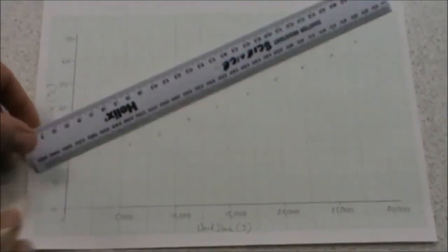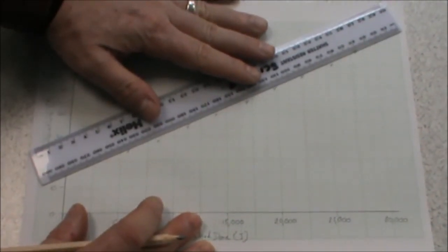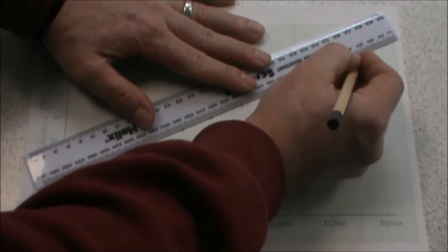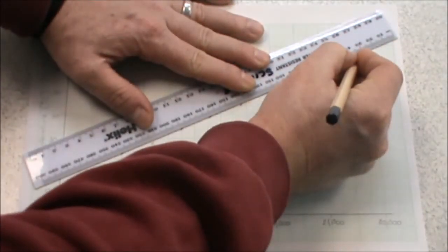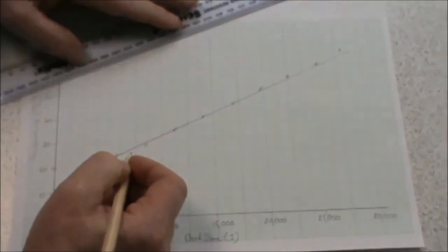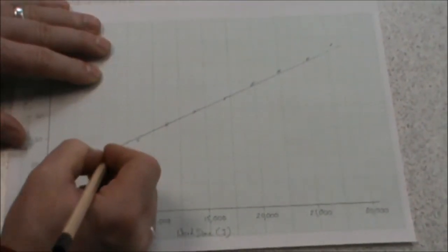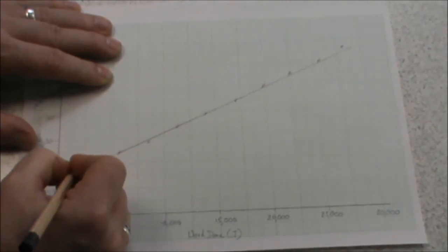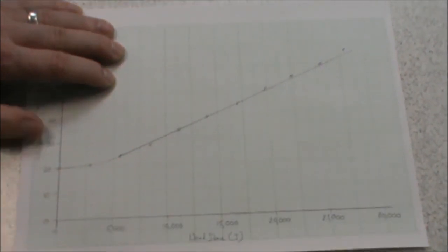Our line of best fit: we use our ruler and we add it to the graph so that we line along as many of the points as possible. We draw a single, smooth, straight line to the point where it starts to curve, and then we finish that off with a single, smooth line with a curve. And there we have our line of best fit.